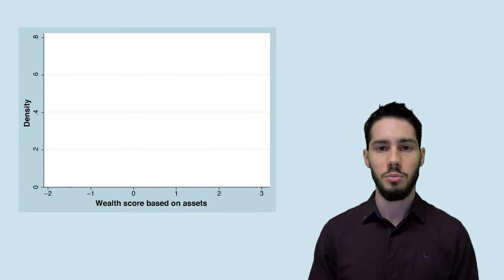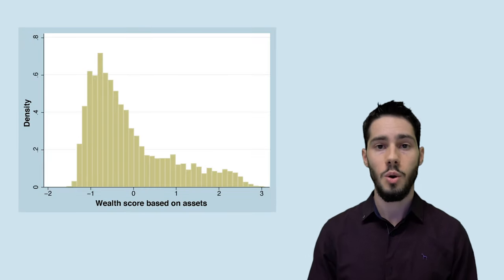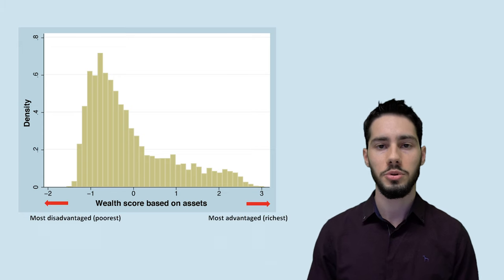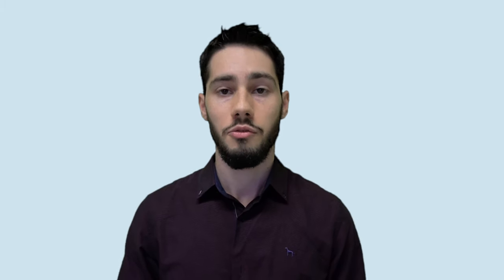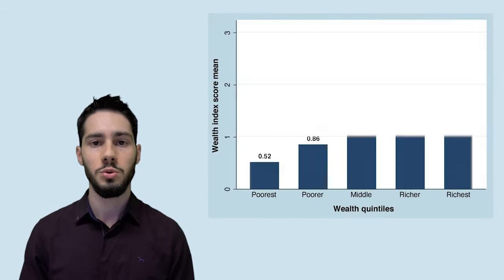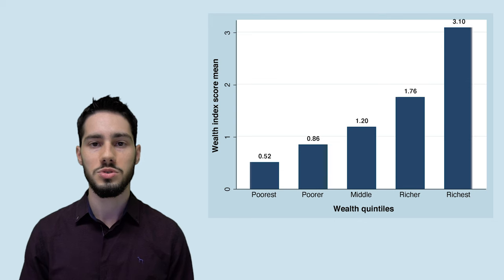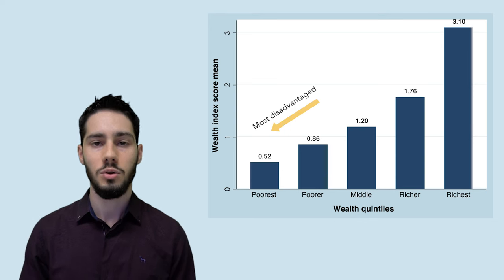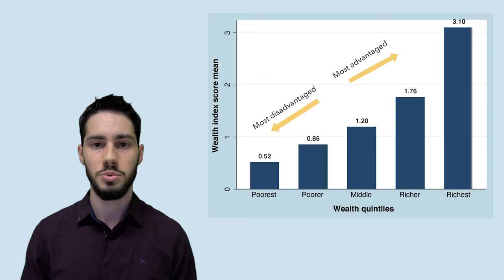The ranking variable has to be a continuous or ordinal variable that sorts our population from the most disadvantaged to the most advantaged individuals. For instance, the wealth quintiles can be used as a ranking variable, in which the poorest quintile will represent the most disadvantaged and the richest quintile will represent the most advantaged.